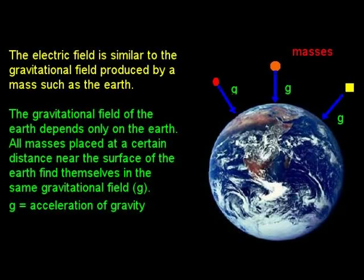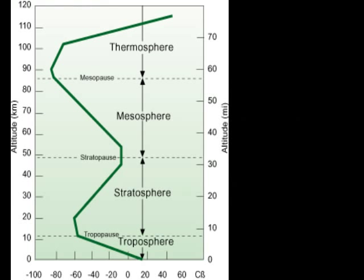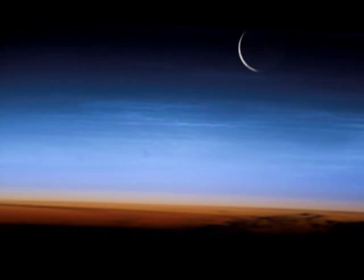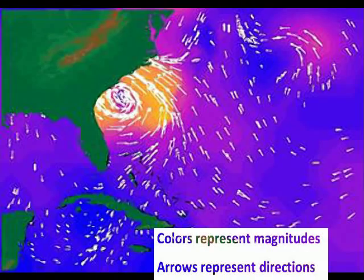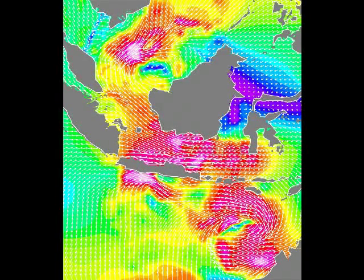The concept of an electric field was proposed by Michael Faraday. The electric field is similar to the gravitational field that is produced by a mass such as the Earth. The gravitational field of the Earth depends only on the Earth, and all masses placed at a certain distance near the Earth find themselves in the same gravitational field. Fields can be scalar or vector fields. A scalar field is specified by its magnitude only — for example, walking from outside to inside during winter, we walk through a scalar temperature field. On the other hand, vector fields can only be specified by their magnitude and direction, such as gravitational, electric, or magnetic fields.